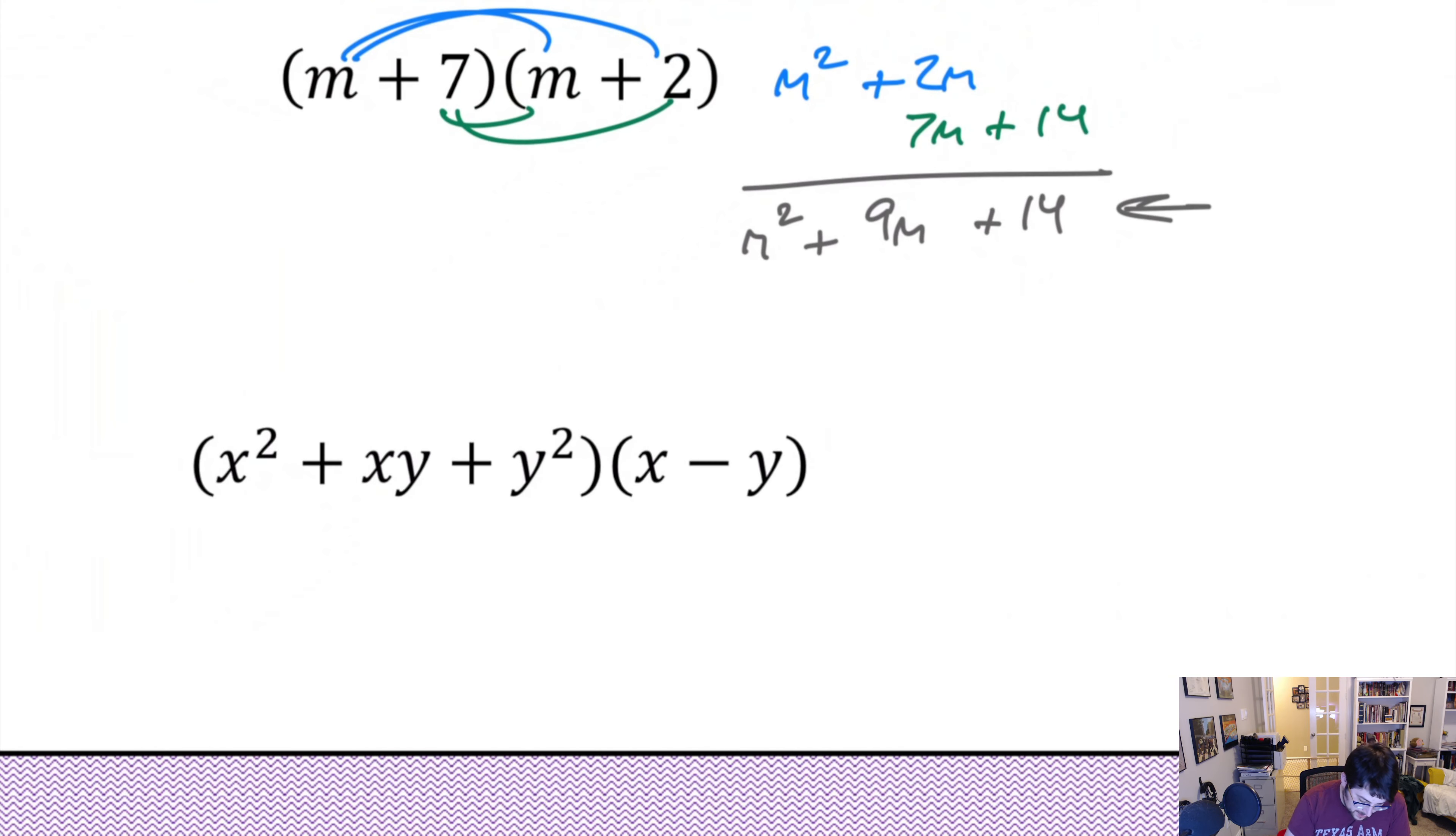Do the same thing over here. So, x squared is going to multiply x and negative y. That'll give me x cubed, x squared times x, and then minus x squared y. Do the same thing with xy. That would give me x squared y minus xy squared. Let's do the last thing. y squared times x gives me xy squared. y squared times negative y gives me minus y cubed. Okay. Now, if we add these up, x cubed stays, these cancel, these cancel, and minus y cubed stays. This would be my answer. You have to multiply times every single term.